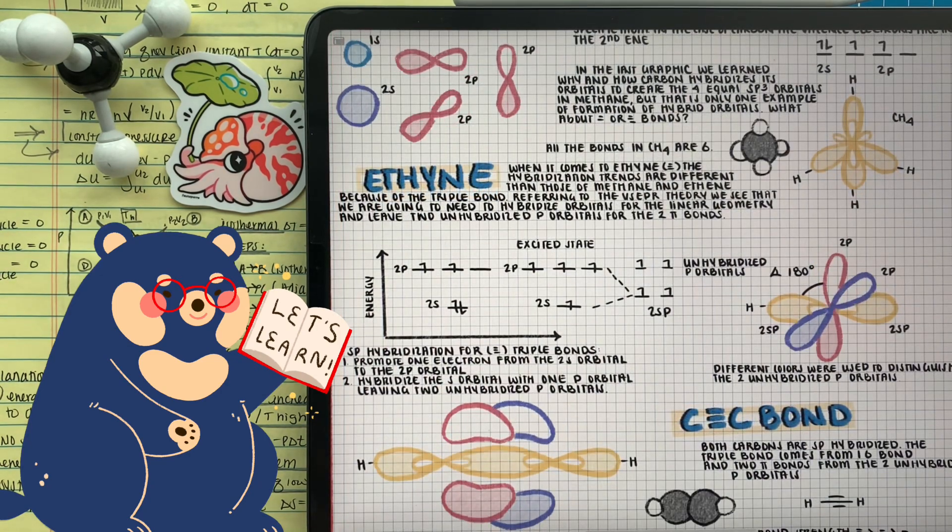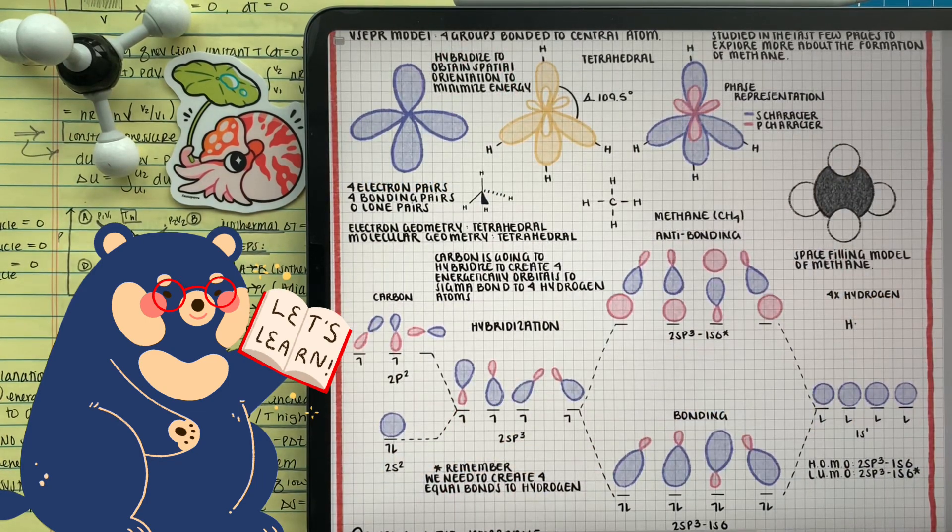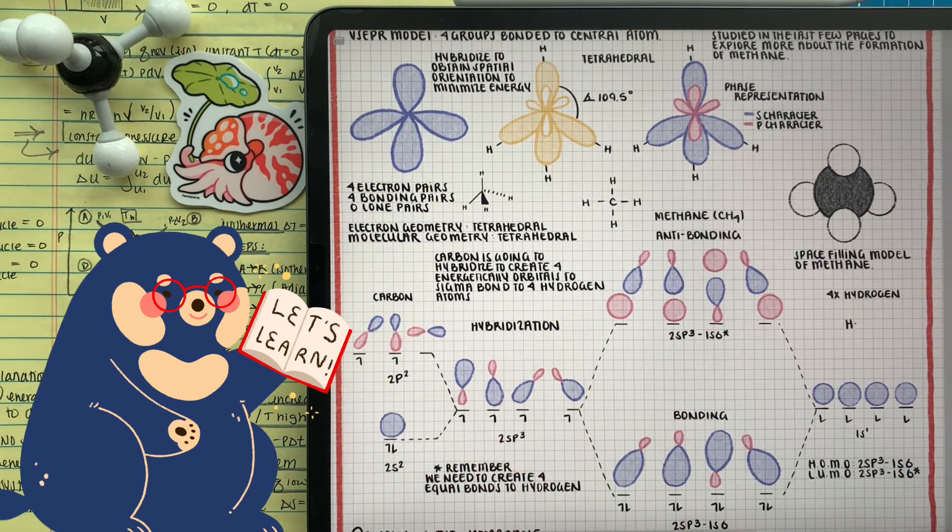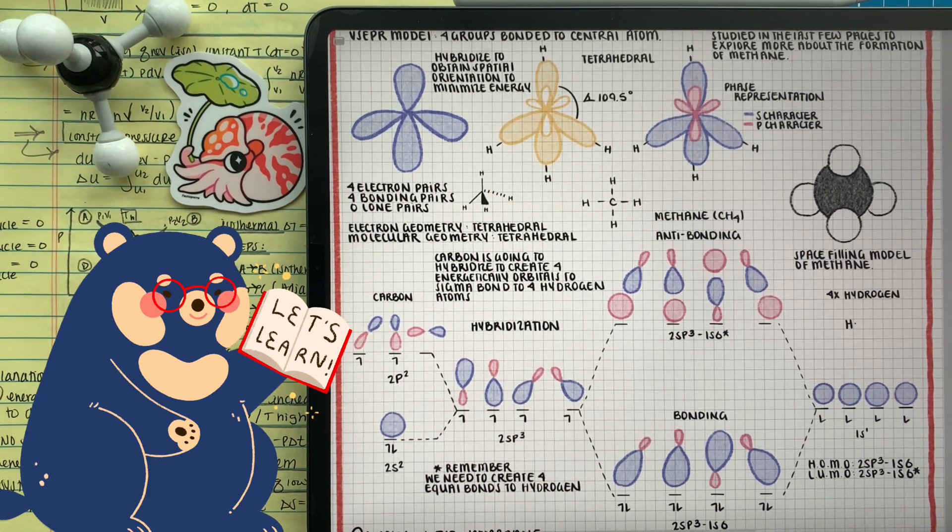So let's summarize what we know that we need orbitals to hybridize to be equal energy to interact with other atoms. So there isn't like an energy difference. So here we have methane. We know that the carbon atomic orbitals are going to hybridize to make two sp3 for two sp3 orbitals.